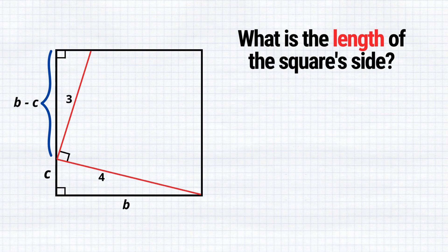Now, we utilize the property that these two triangles are similar to each other. Consequently, the proportion of the longer leg to the hypotenuse will be equal. We can write it as (B minus C) over 3 equals B over 4.